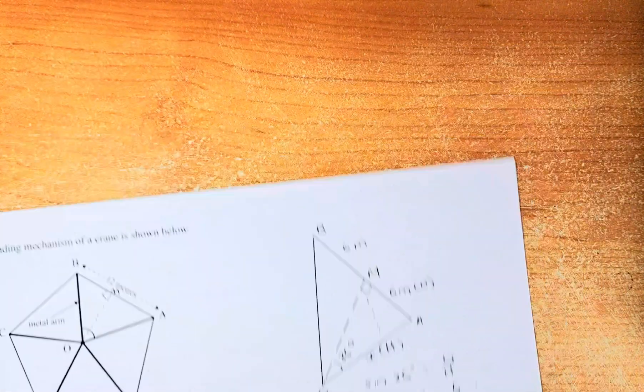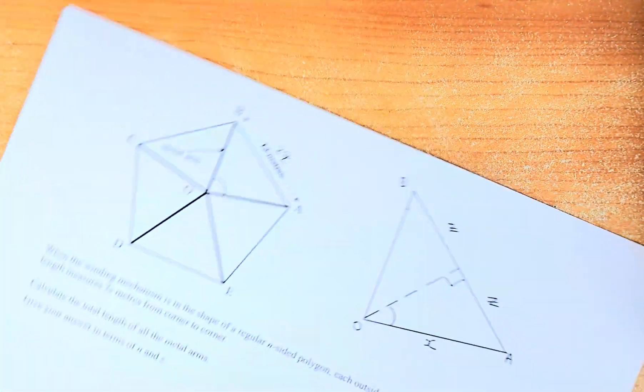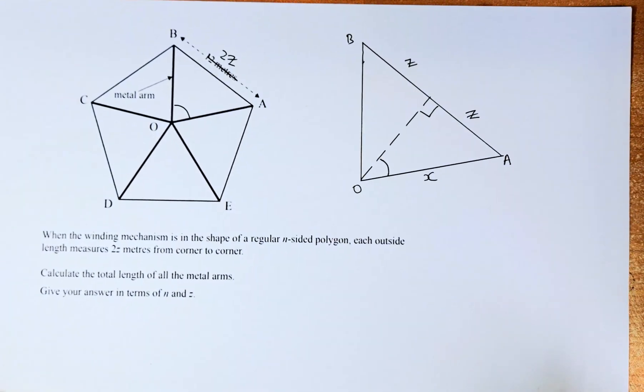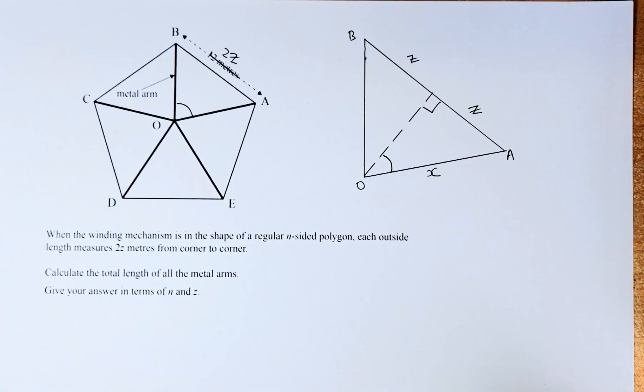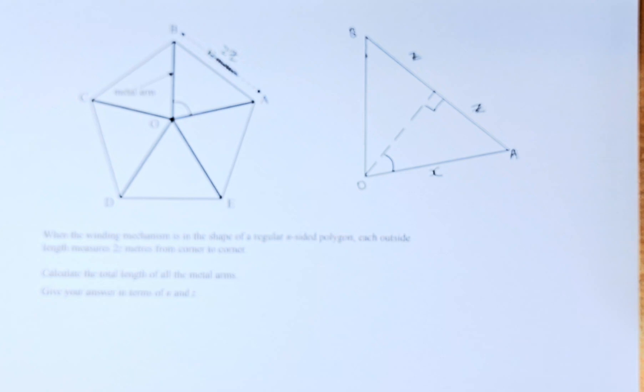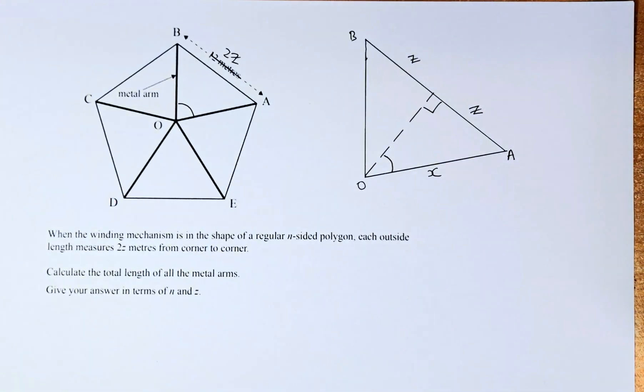Now we shall do the excellence question. The excellence question is very similar but in terms of algebra. So we shall read the question. When the winding machine is the shape of a regular N polygon, so you do not know how many sides there are. So we assume we use the pentagon. So it's N.